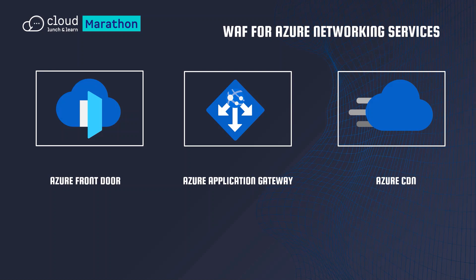Front Door is a global service using software-defined networking. SSL certificates and configuration are stored and deployed to Microsoft Edge locations around the world. It is also possible to combine both services — using Front Door for global load balancing and Application Gateway at a regional level. You can also deploy Web Application Firewall on Azure CDN, but currently WAF on Azure CDN from Microsoft is in public preview.